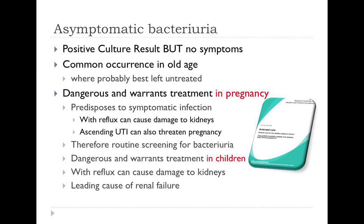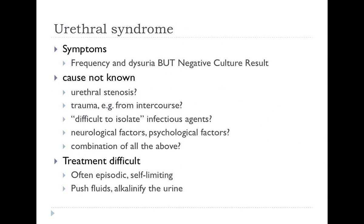Asymptomatic bacteriuria is the presence of bacteria in the urine on culture but no symptoms in the patient. It's incredibly common in old age, which is why we say do not take urine specimens from the elderly unless you have a good reason. Studies in old women show it's definitely best left untreated — the harms of treating are much greater. However, in pregnancy even asymptomatic bacteriuria is dangerous as it can predispose to upper UTI and early labour, so urine is cultured at every antenatal appointment. It is also dangerous in children, as reflux of infected urine up the ureters can damage the kidneys and is the single most common cause of chronic renal failure in children in this country.